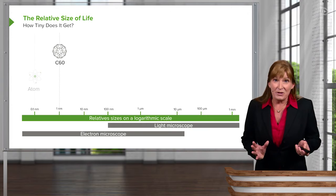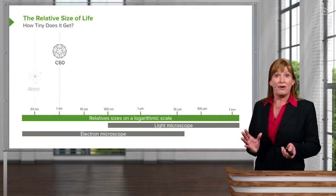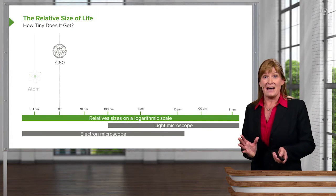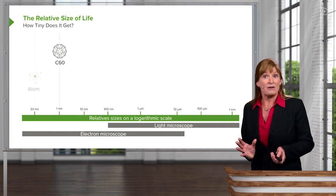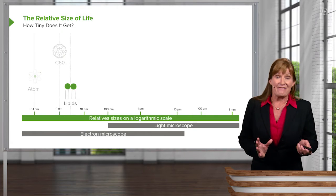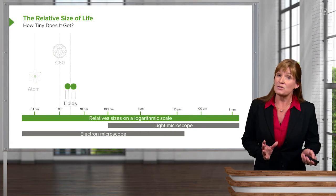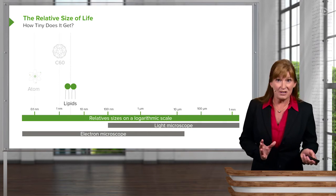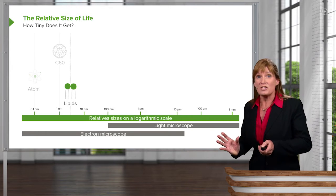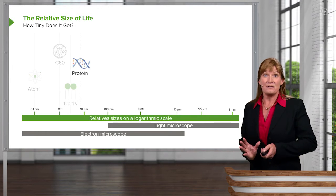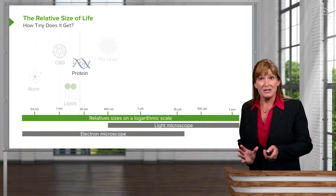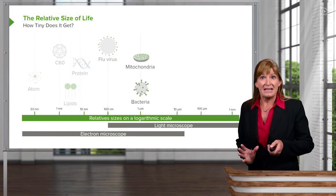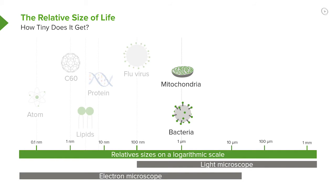Even when we put 60 or so atoms together, we still can't see that under a light microscope. And even if we look at the macromolecules, which is a lot of what we're going to be spending this course on, we still can't see those. It's not until we start looking at mitochondria and bacteria that we can start even seeing those things under a light microscope.